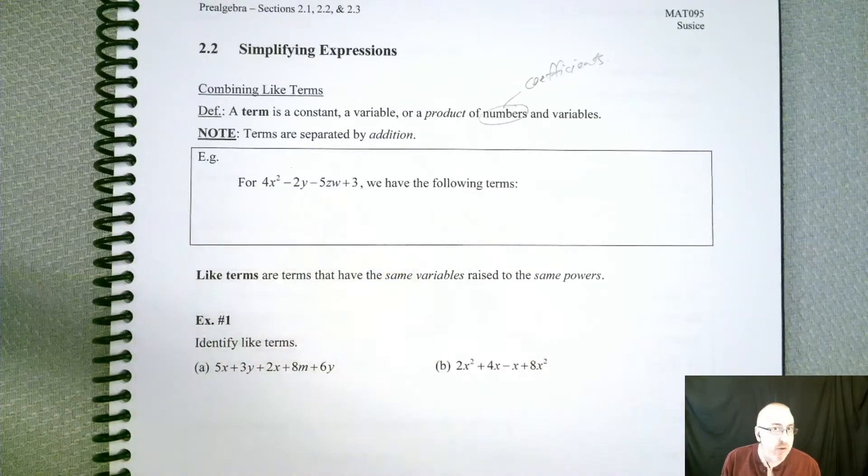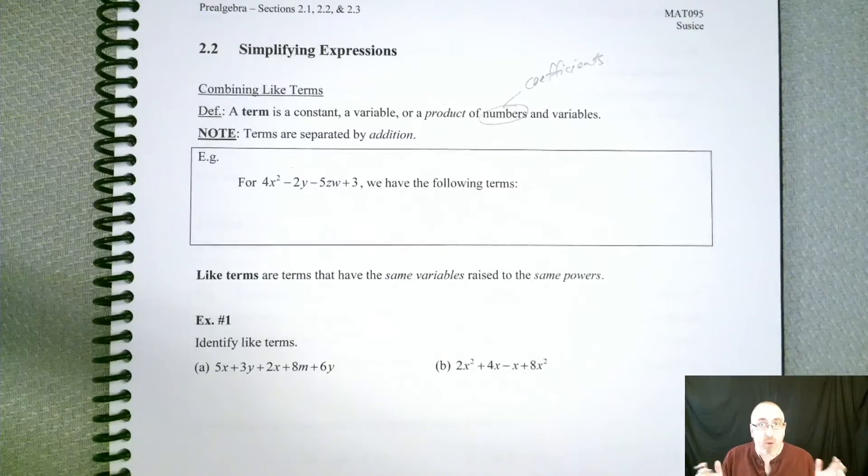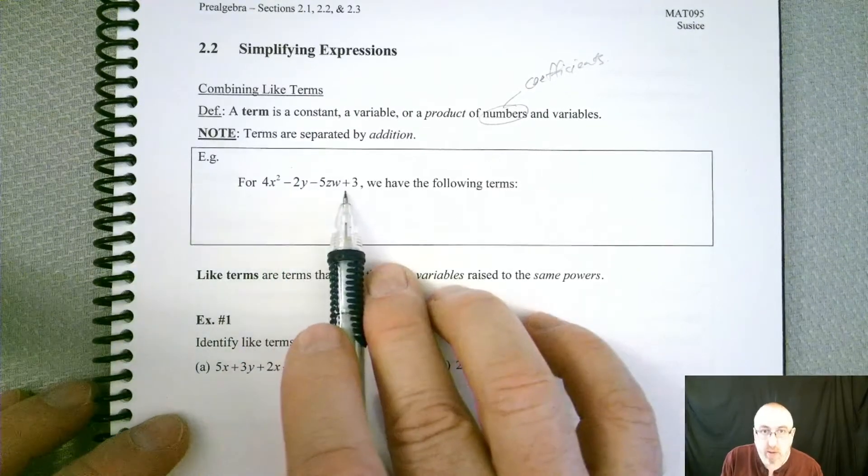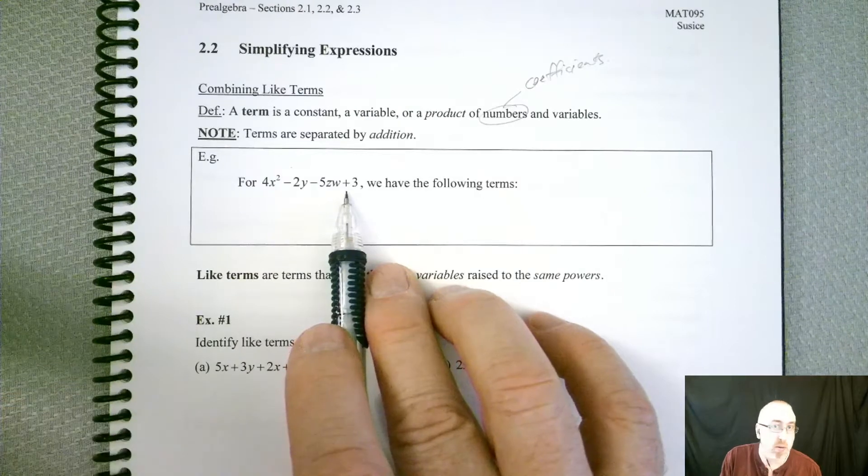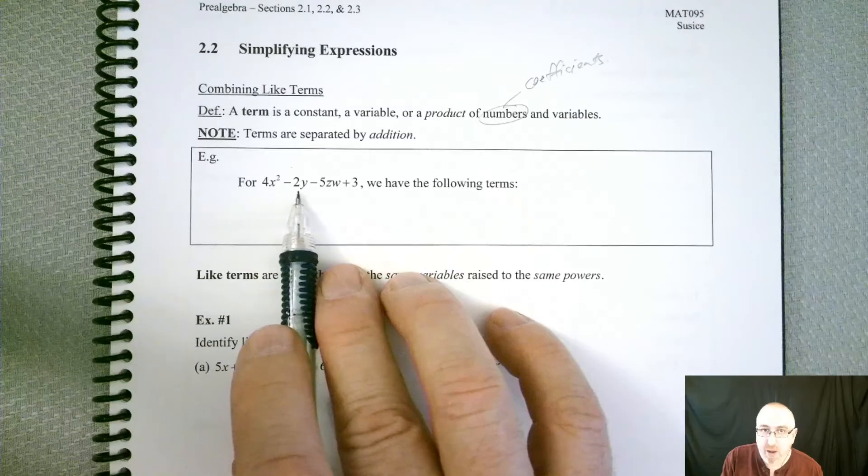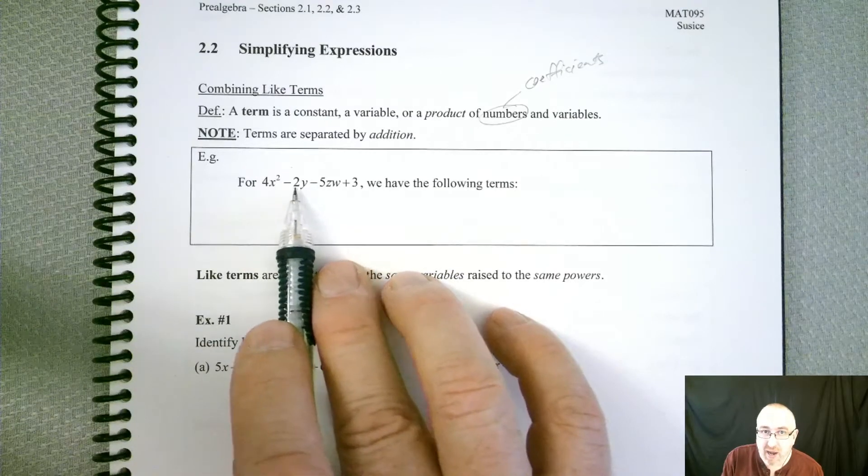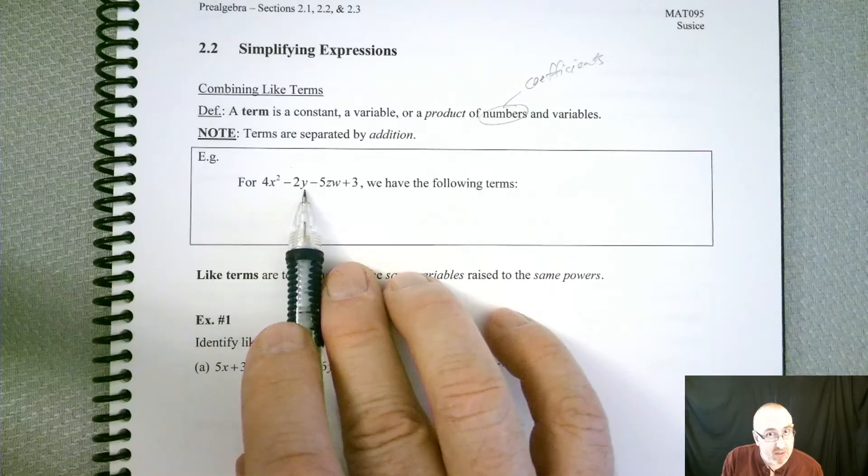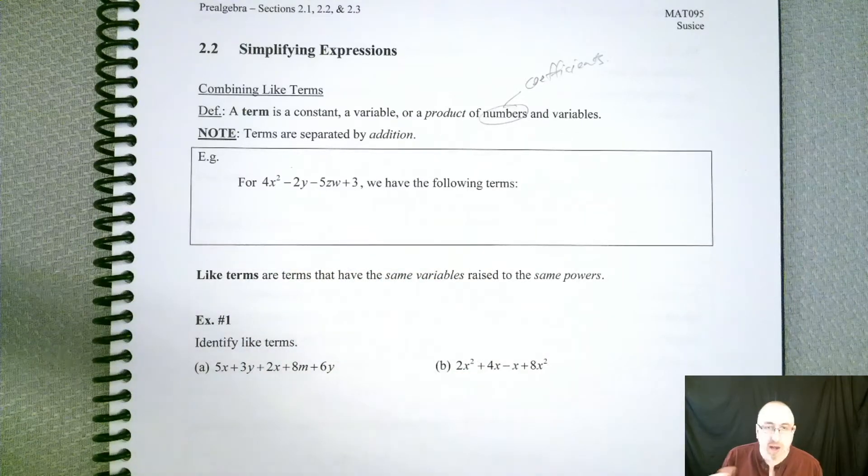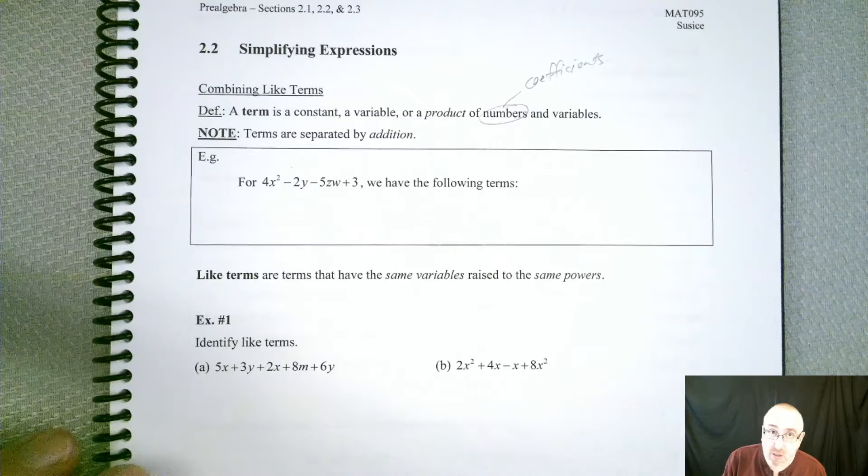So let's take a look at this example. We have 4x to the second power minus 2y minus 5zw plus 3. So how many terms do we actually have in that whole expression? Now you might say, well, there's only one addition symbol here, so I'm guessing 2. But then it's like, well, but I've got a lot of stuff with coefficients and variables together. And you can bat this around quite a bit, but it turns out there's actually 4.